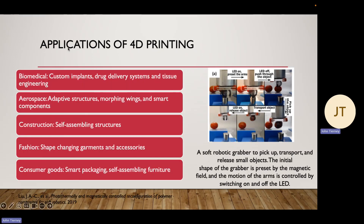Here are some examples of the types of applications 4D printing is utilized in. In biomedical applications, specifically targeted drug delivery systems, you'll see that hydrogel filament the most. For aerospace, in the context of morphing wings, a metal-based alloy is used as filament for 4D printing. Morphing wings are drone wings that can bend up to 20 degrees in response to different external stimuli, improving flight efficiency.